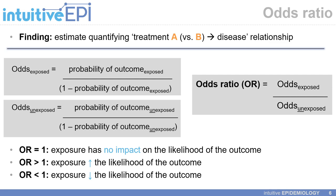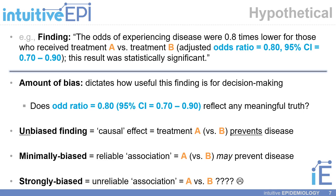This is a hypothetical finding that you may find in the abstract of a scientific paper: the odds of experiencing disease were 0.8 times lower for those who received treatment A as compared to treatment B. You will see an odds ratio of 0.8 alongside a 95% confidence interval, which is a measure of precision around that point estimate of 0.8, and you might also read that this result was statistically significant. The amount of bias in your study dictates how useful this finding is for decision making — in other words, does the odds ratio of 0.8 reflect any meaningful truth?